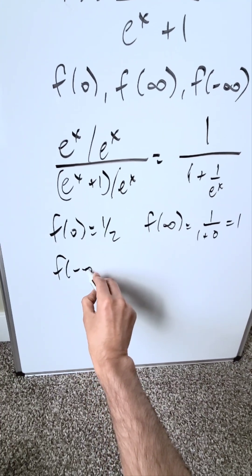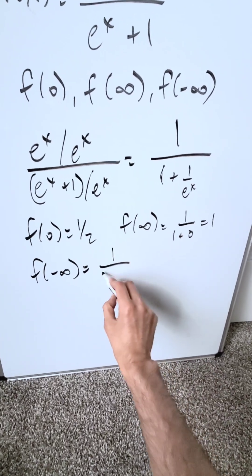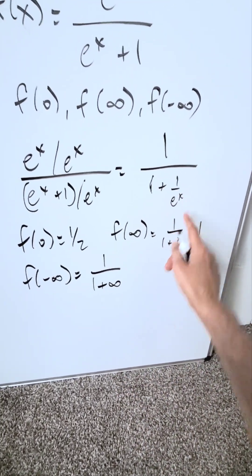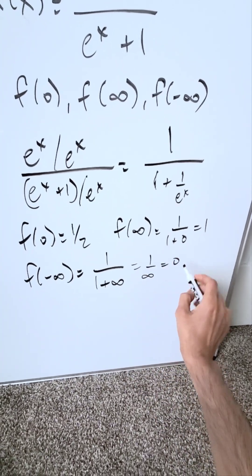If I do f of minus infinity, how does that play out? What do I have? I'm looking at 1 over 1 plus infinity, because I'll be looking at a reciprocal, 1 over 1 plus infinity, which will be 1 over infinity, and that tends towards 0.